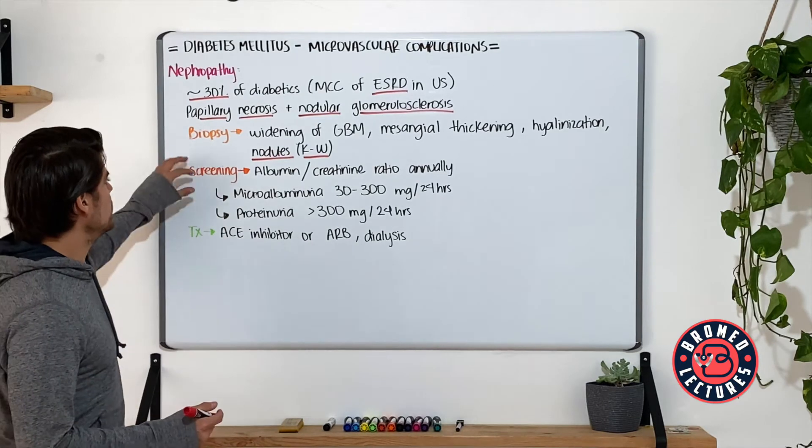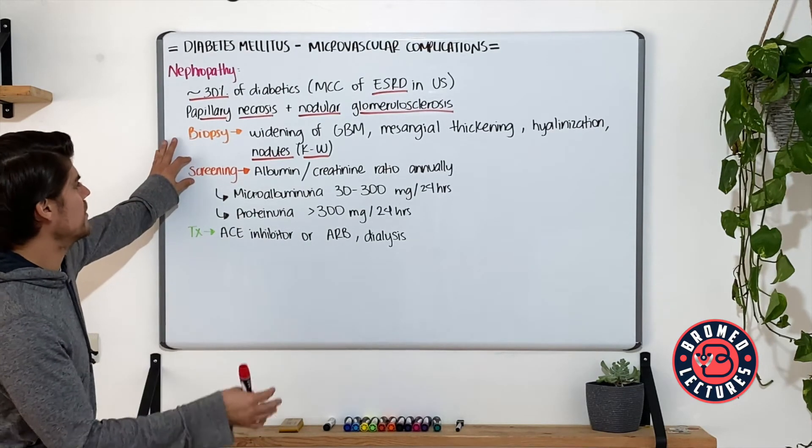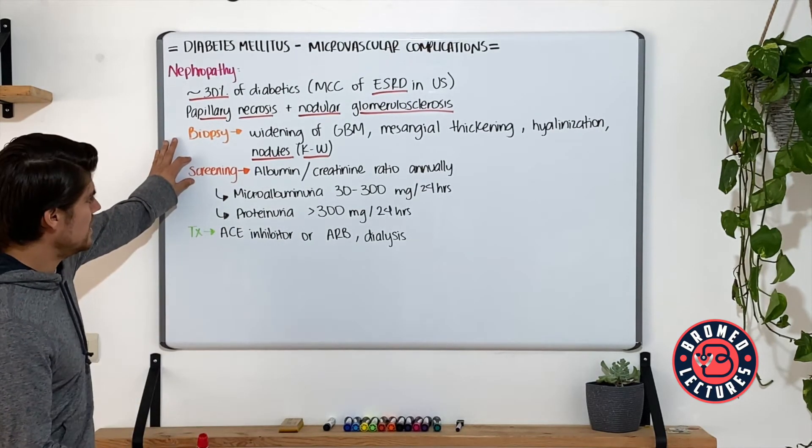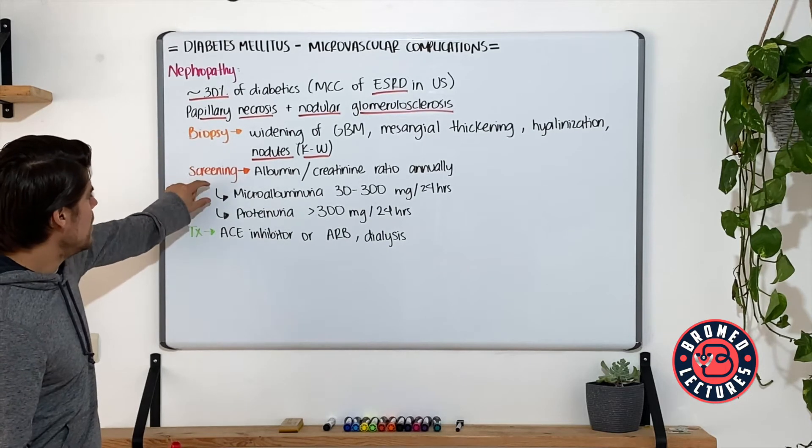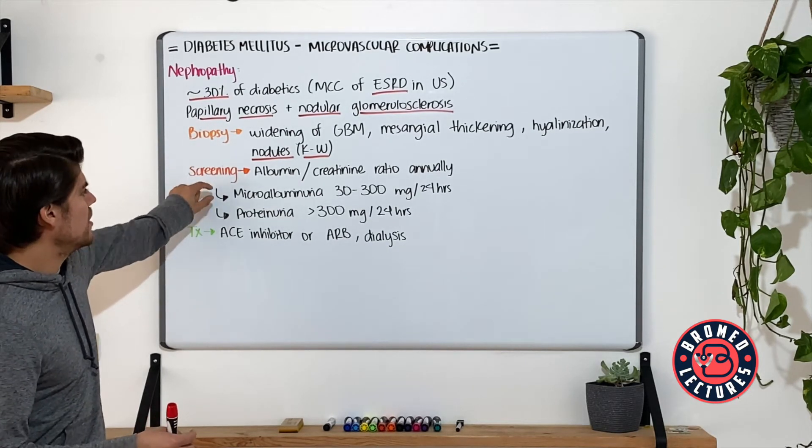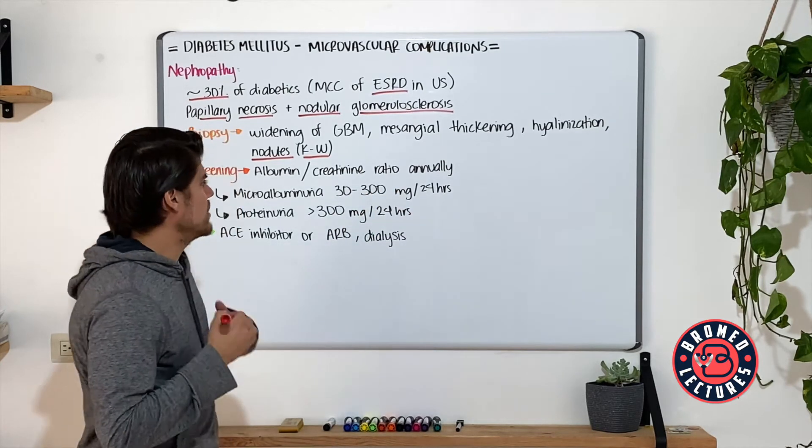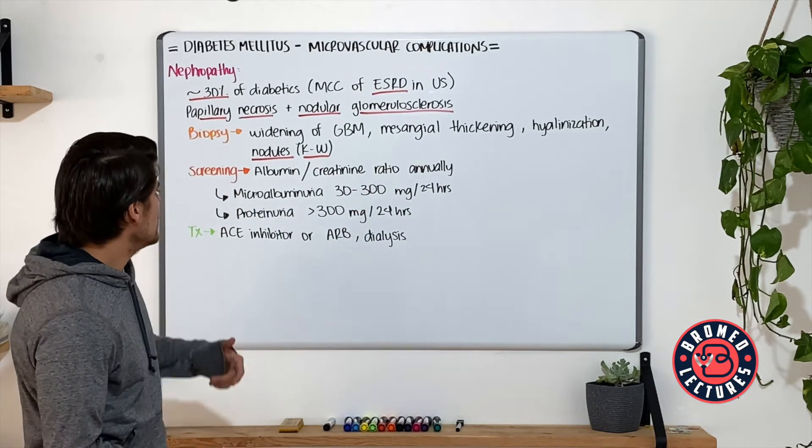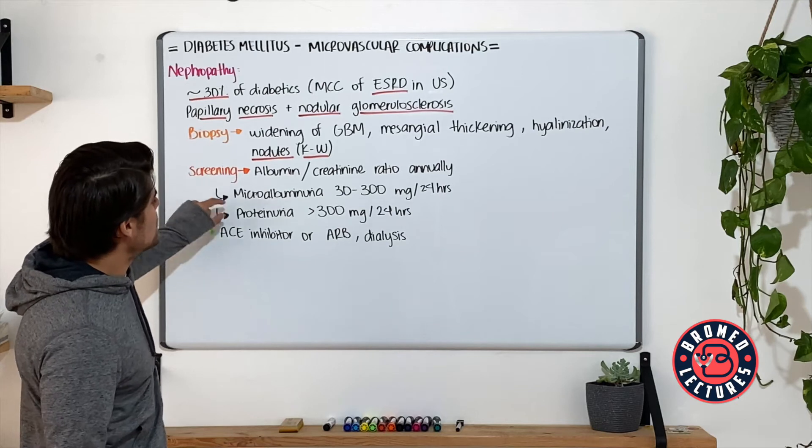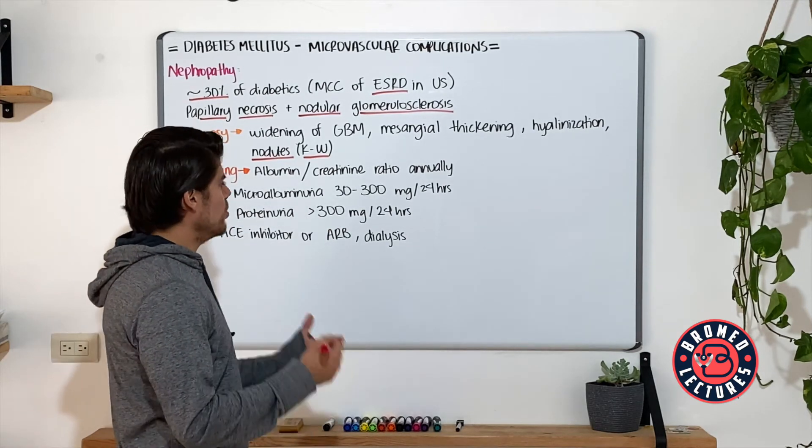For screening, we perform an albumin-creatinine ratio annually. We categorize patients as having microalbuminuria if they develop 30 to 300 milligrams of albumin in urine over 24 hours, or proteinuria if they have more than 300 milligrams over 24 hours.